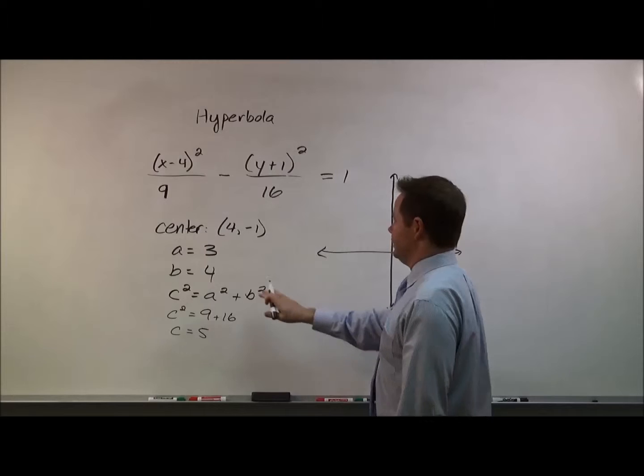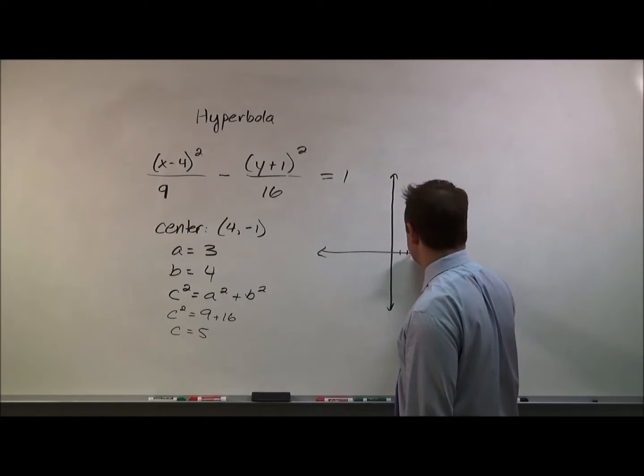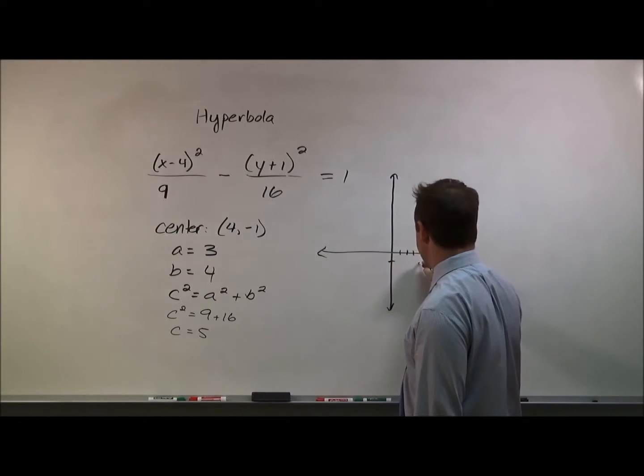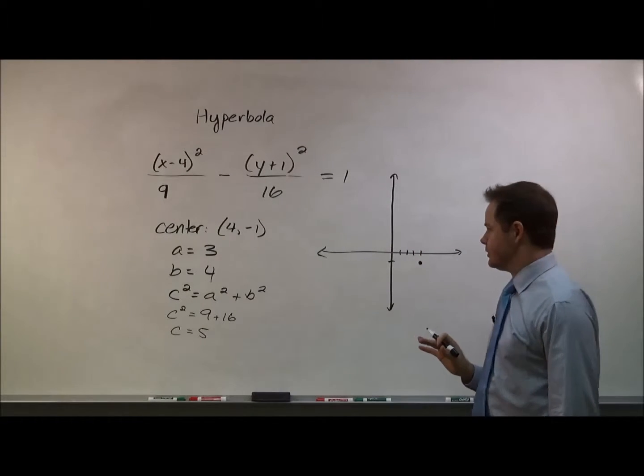So we have our axes and our center is at four, negative one: one, two, three, four, and negative one. So we'll have a point there representing the center.